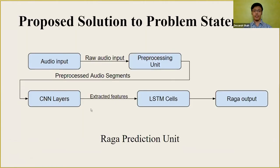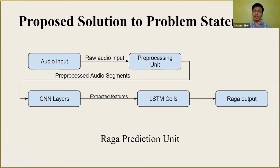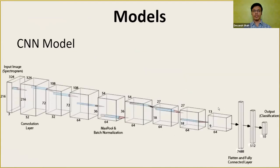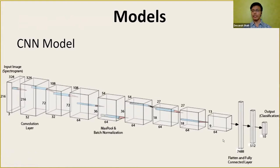Moving on to the Raga prediction unit — we also adopted a hybrid CNN plus LSTM architecture. The aim of the CNN layers is to extract features from the spectrogram images, and the aim of the LSTM layer is to extract features from a sequence of spectrograms, with the LSTM layer giving the final output. At a high level, the model takes an input of 324 by 216 across three RGB channels, and then using four convolutional layers, flattens it into a vector of size 748.